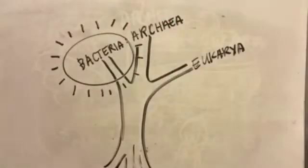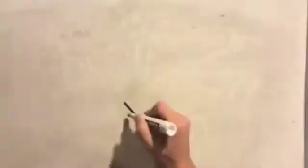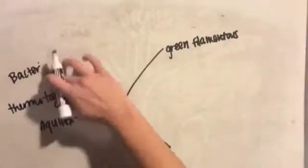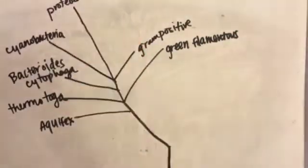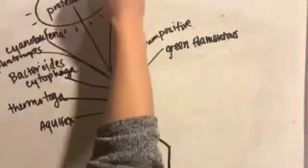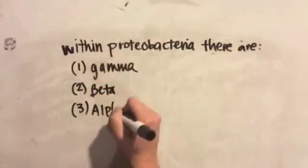Within the phylogenetic tree, there are bacteria, Archaea, and Eukarya. We will be focusing on bacteria. Within bacteria are different phyla. Bdellovibrio is a proteobacteria, and more specifically, a delta proteobacteria.